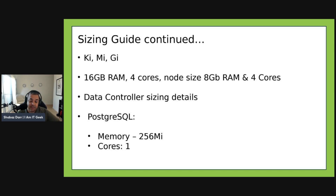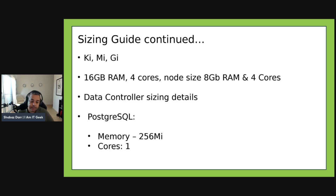The data controller is a collection of pods deployed to your Kubernetes cluster to provide an API, the controller service, the bootstrapper, and the monitoring databases and dashboards. There are detailed memory and CPU values covered in the linked guide. For each PostgreSQL node you must have a minimum resource request of 256 Mi of memory and at least one core.